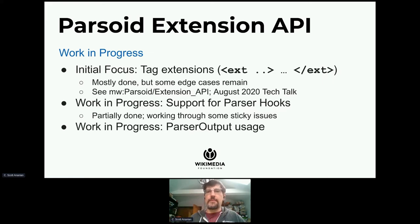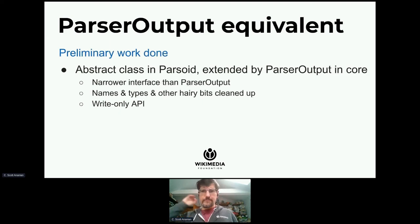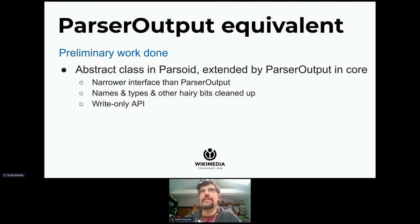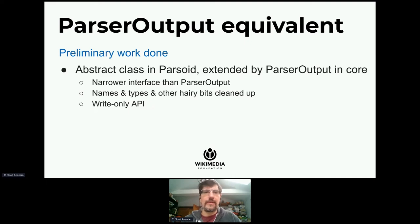Similarly, we have a new extension API. A number of extensions have already been ported to it. We support some but not all of the existing parser hooks, and we're currently working on supporting parser output. We have a new abstract class in Parsoid which core now extends, and it has a narrower interface than parser output. The old parser output class has been growing organically for close to 20 years, so we've taken the opportunity to clean up names and types and generally make things consistent. I've already merged a number of those patches to Semantic MediaWiki for things like renaming methods and cleaning up types.